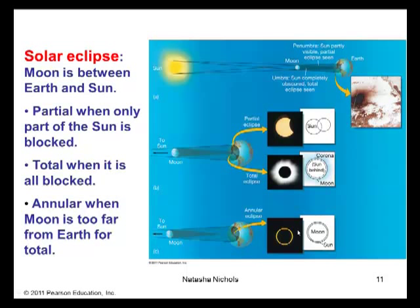In frame C, if the Moon is too far from the Earth at the moment of the eclipse, then the umbra does not reach the Earth. You see how it doesn't actually fall on the surface of the planet. Therefore, there is no region of totality. Instead, we have what is called an annular eclipse. Then we have this ring phenomena, this annulus phenomena. So we have a partial solar eclipse when only part of the Sun is blocked, a total when it is all blocked, and annular when the Moon is too far from the Earth for total solar eclipse.